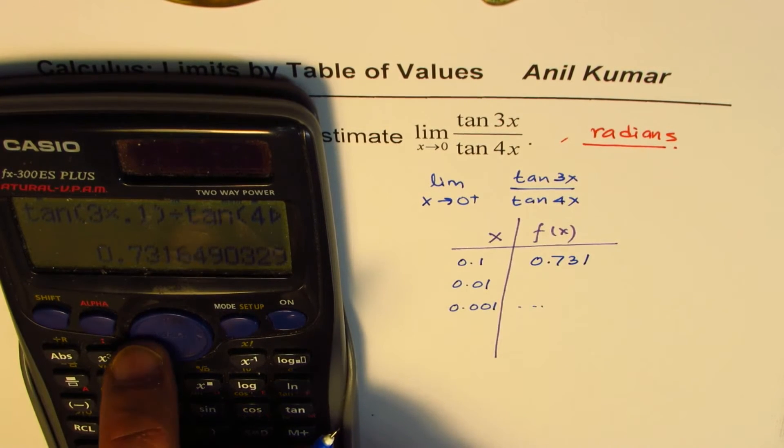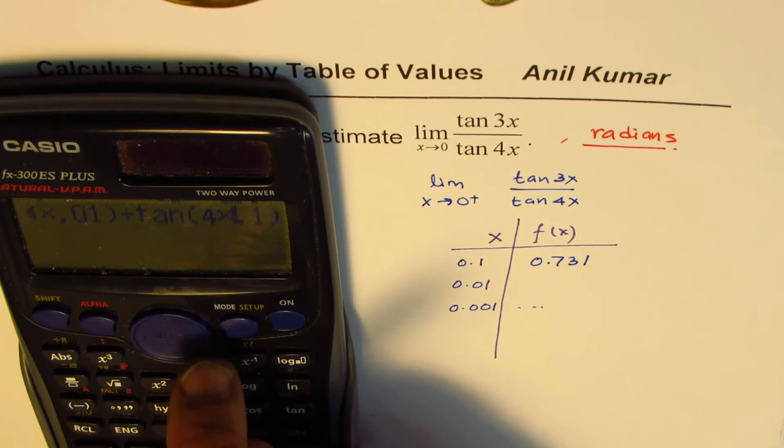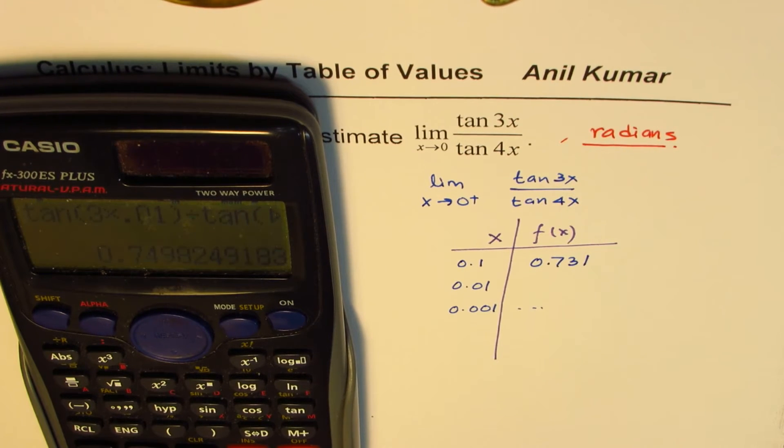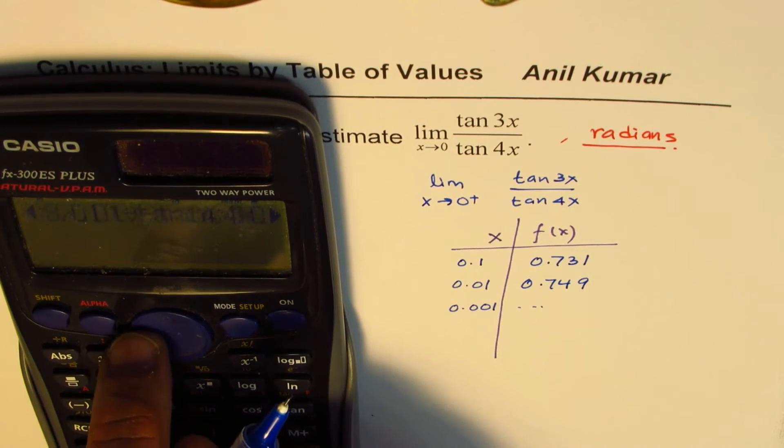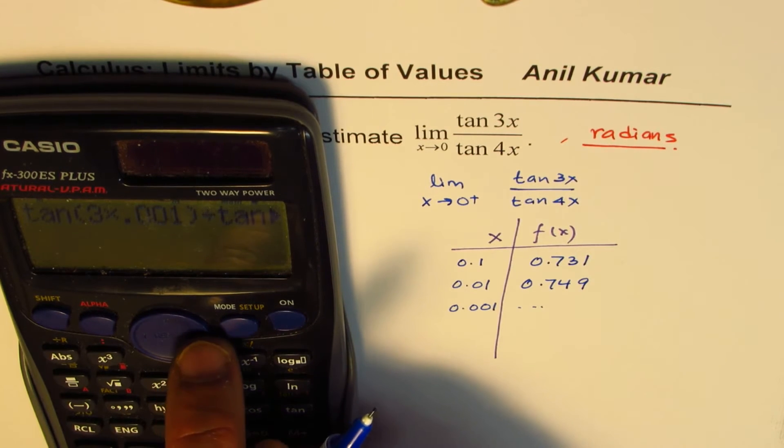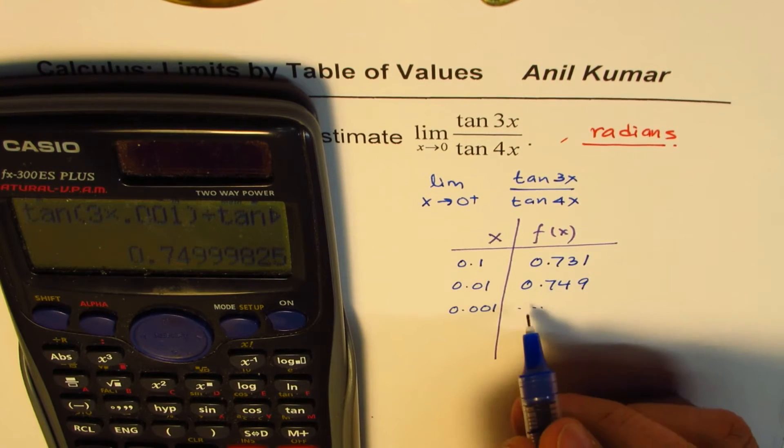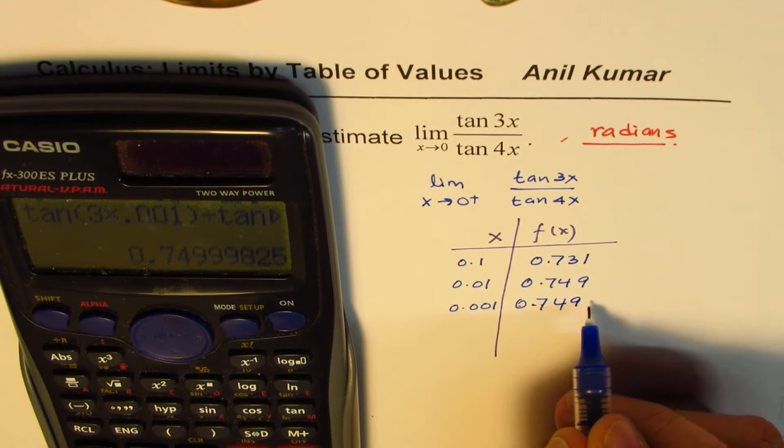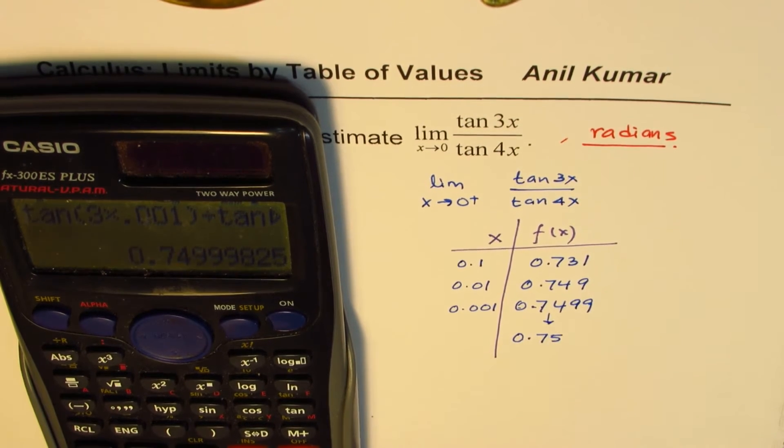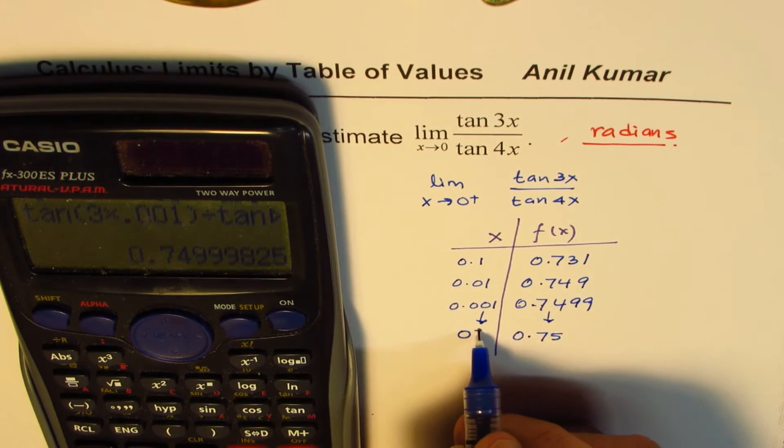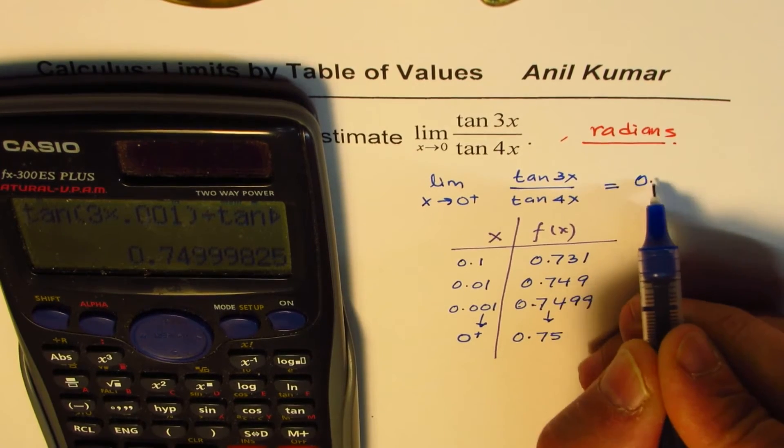Let's replace this 0.1 to 0.01 and see what happens. So if I write 0.01 for both numerator and denominator x values and evaluate, I get 0.749. And if I write 0.001, it is even closer to 0, but from the right side. So what I get here is 0.7499. So eventually, we see that it approaches 0.75 as the value approaches 0 from the right side. So that becomes the limit of this function. We could write this limit as 0.75.